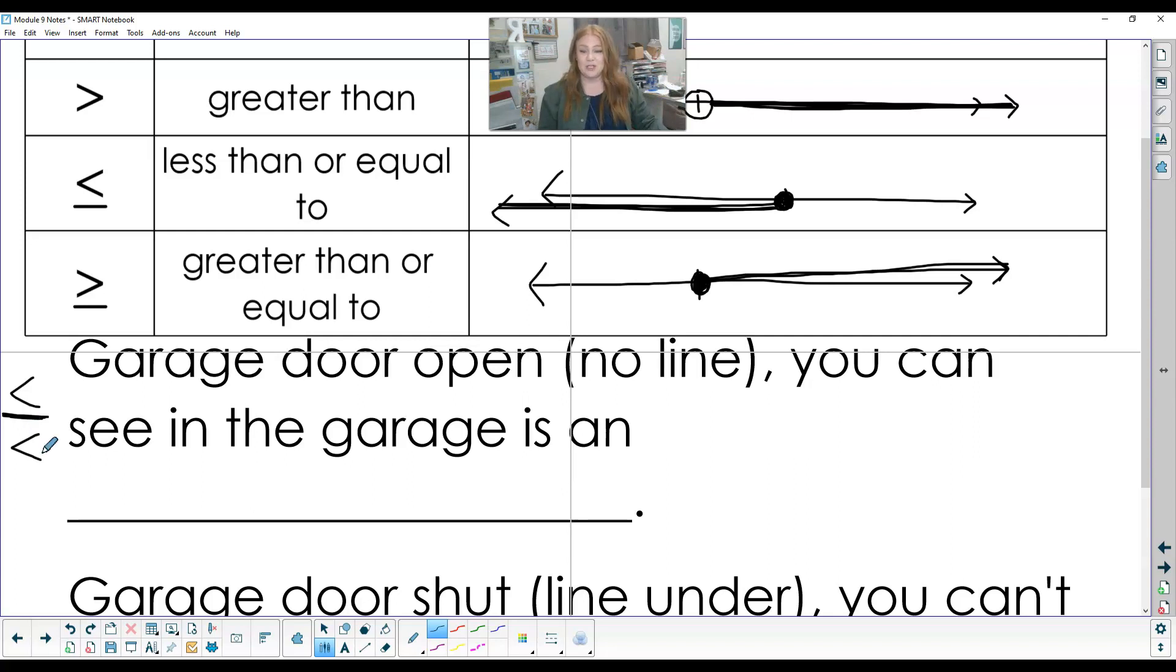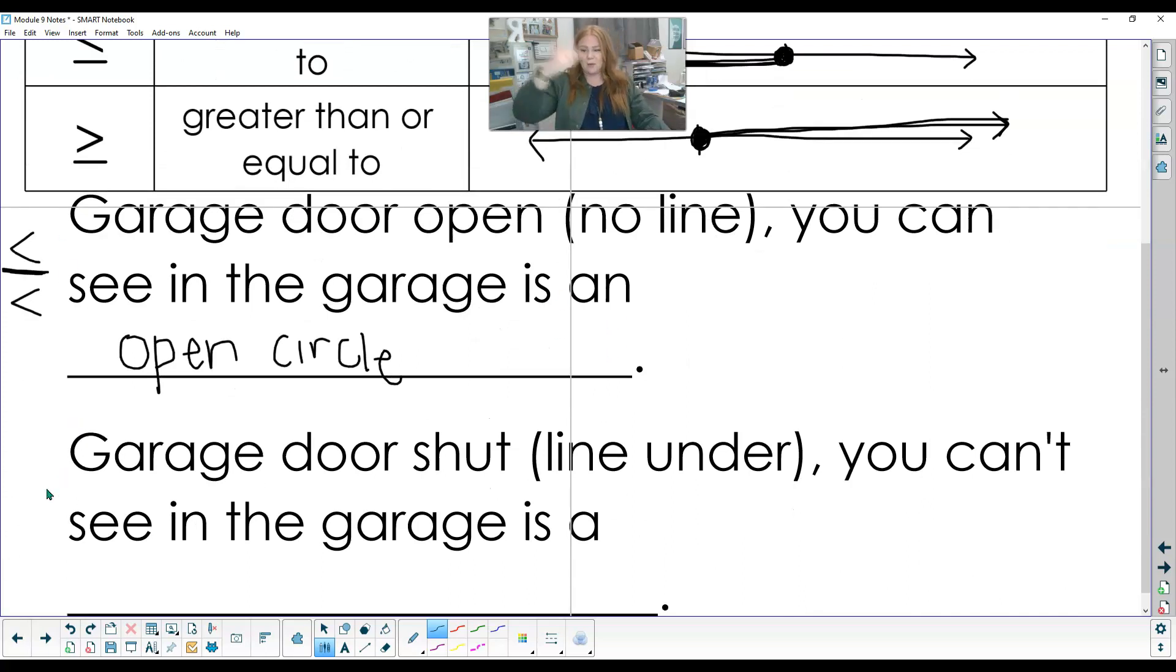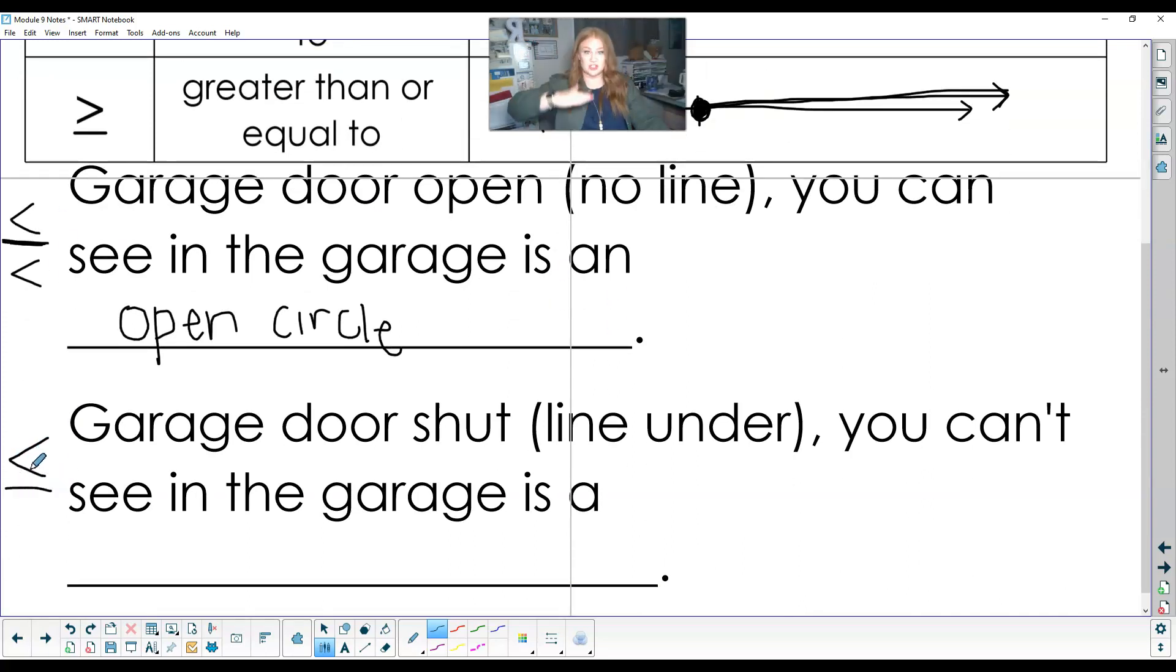And now I can see into the garage and I can see everything in that garage. It's going to be an open circle. So when the garage door is open, it's up. You can't see that line. That means I can see everything in the garage. When I look in here, I can see all of that stuff in the garage. So now when the garage comes down and now my garage is shut. The garage is shut. I can't see into the garage. It just closed everything. So now I'm going to draw a closed circle and I'm going to fill it in so that I can no longer see in that garage.